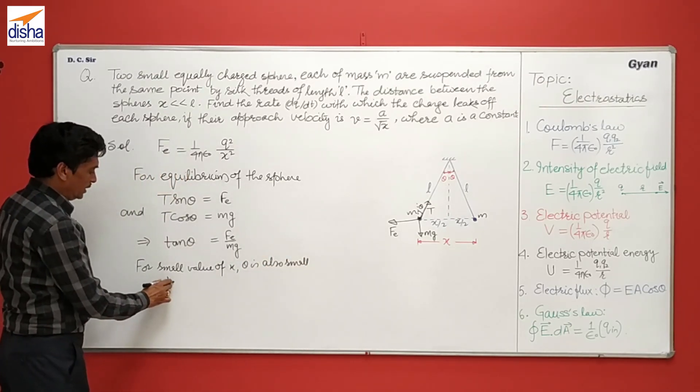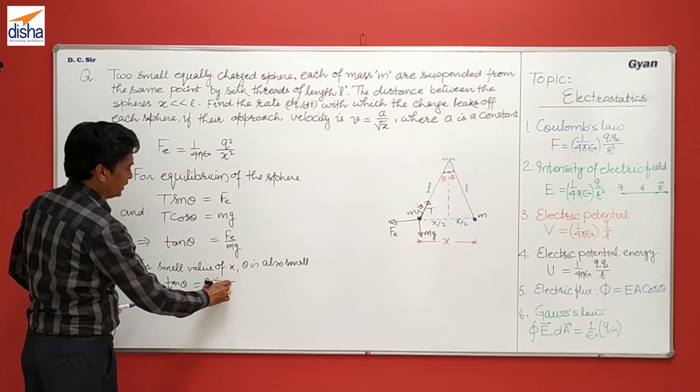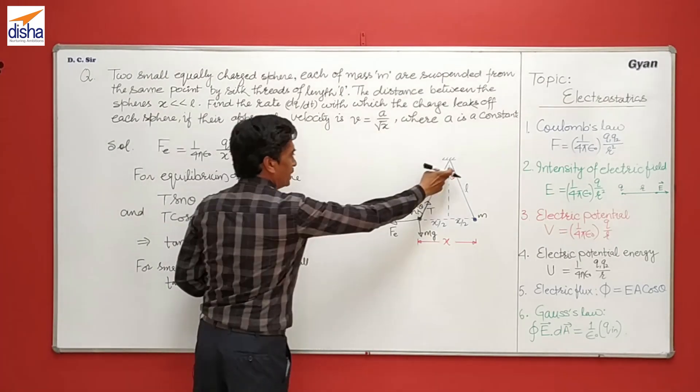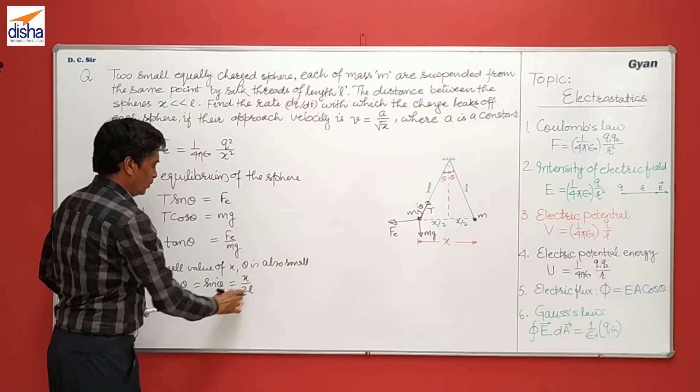So tan theta approximated to sin theta. And from the geometry, sin theta here, from this triangle, it is x by 2L, so it will be x upon 2L.